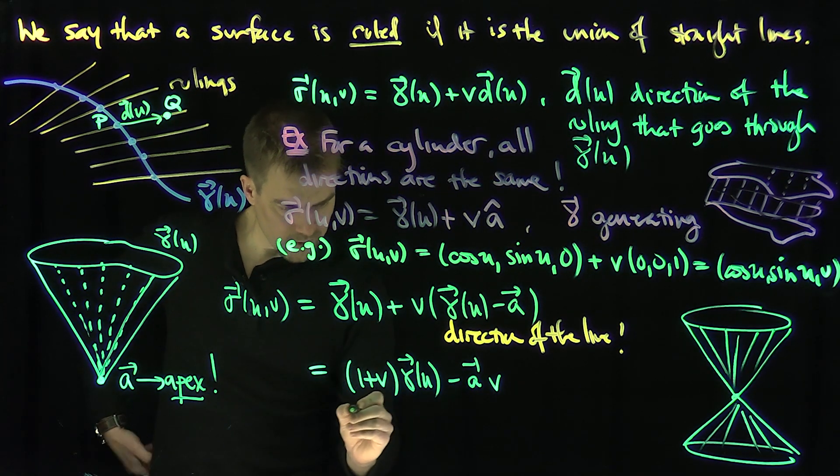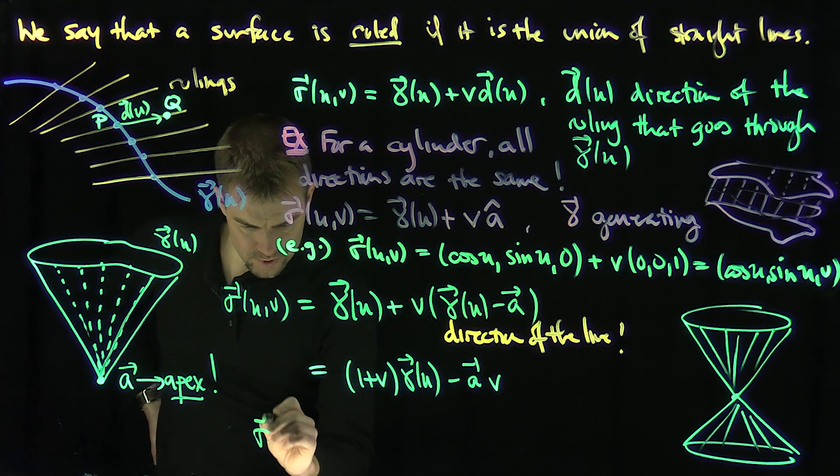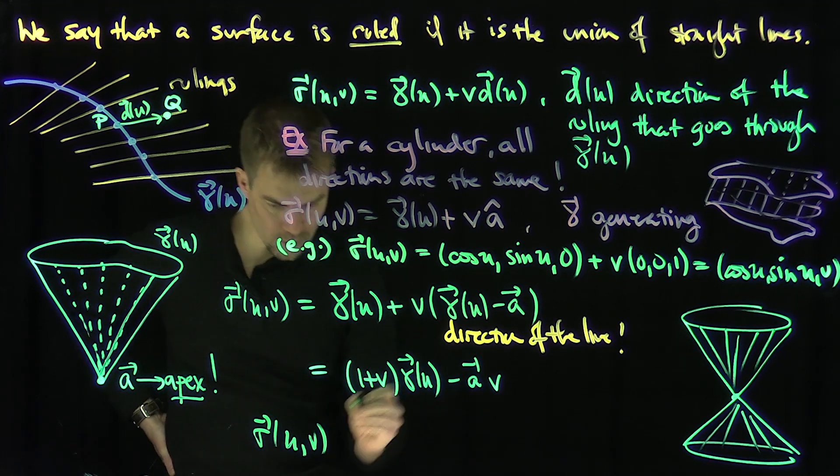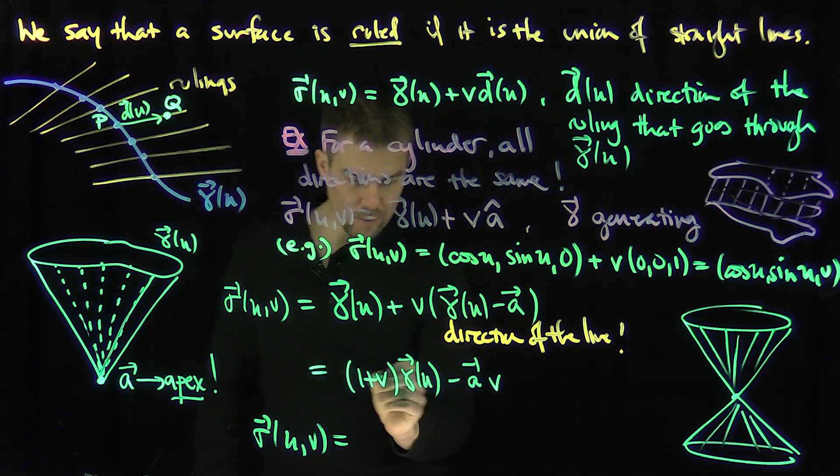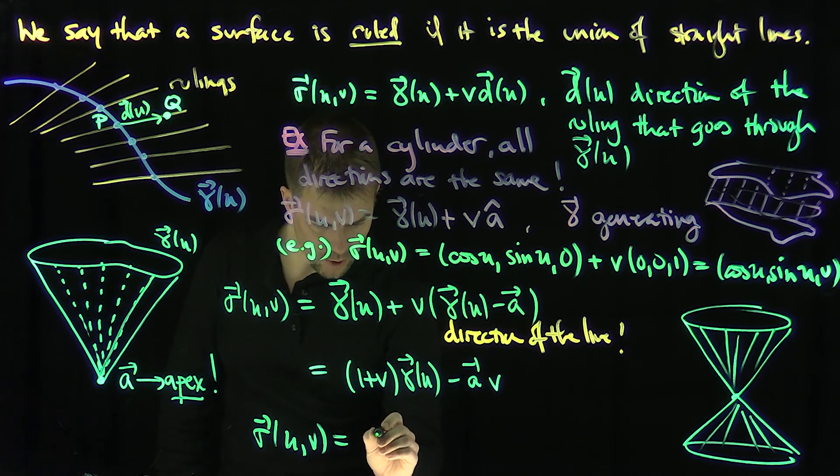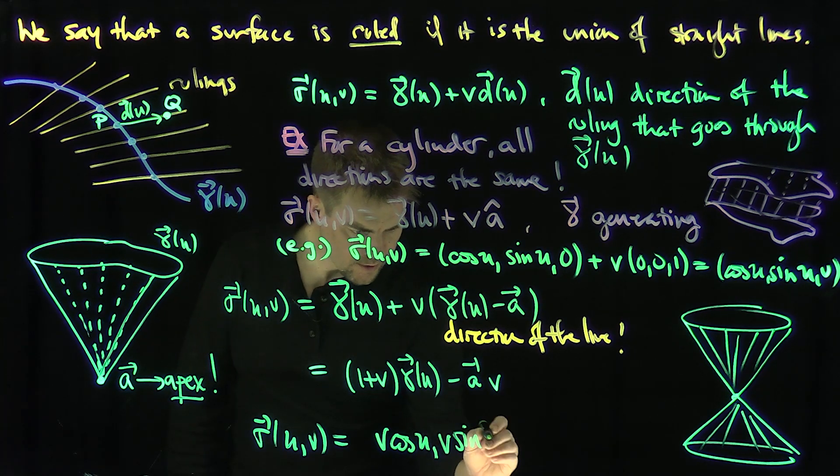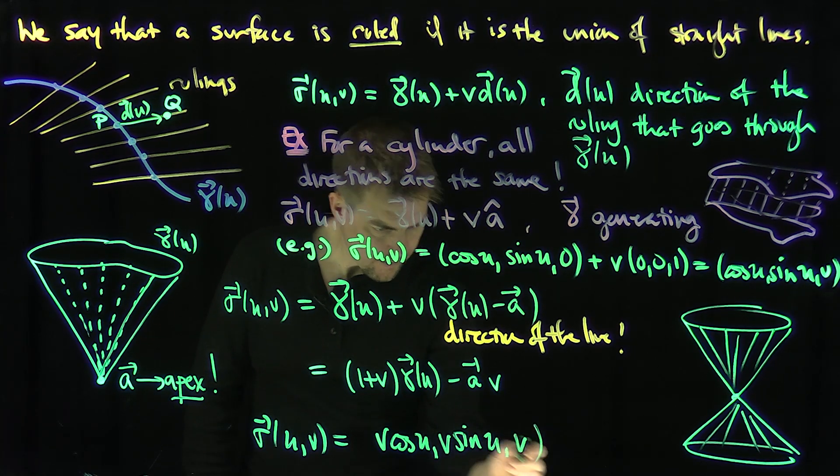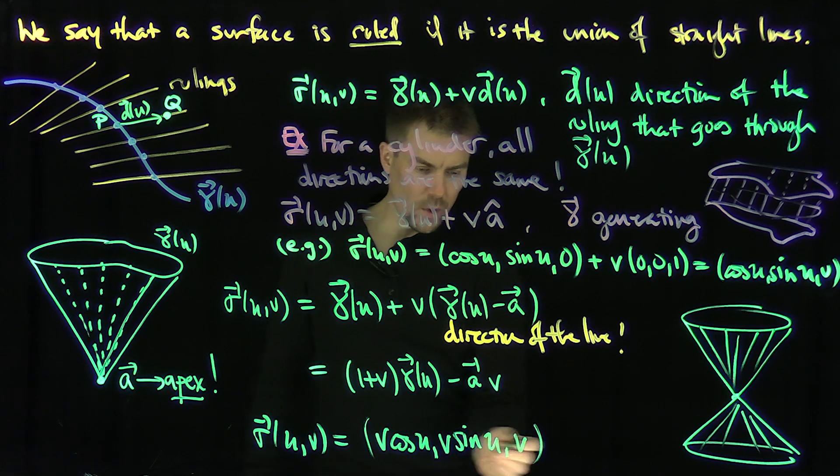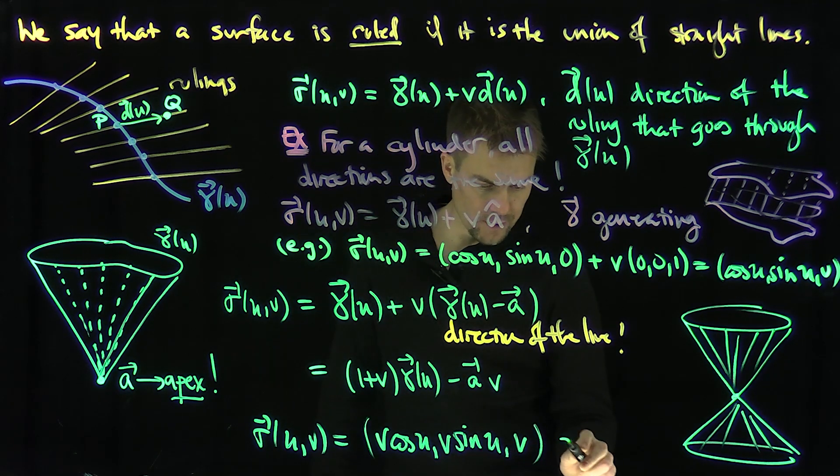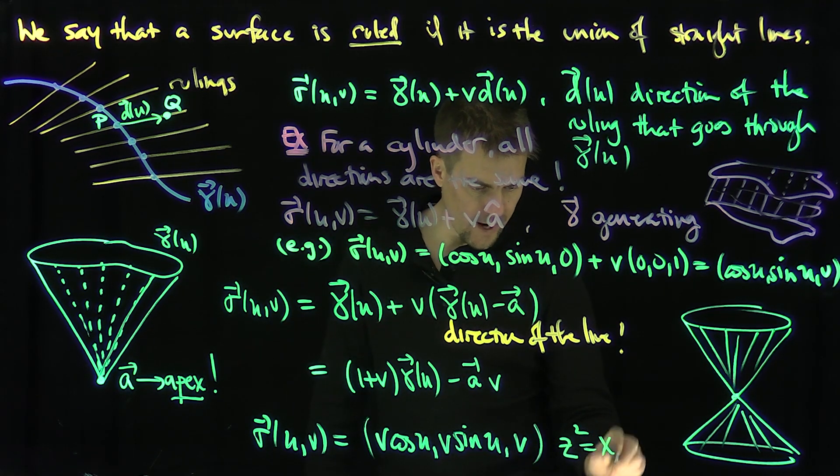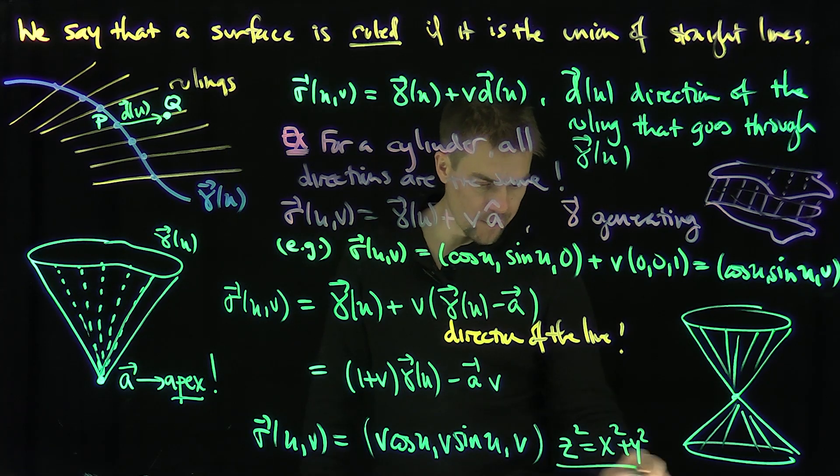Well, what this is going to be is the following. The standard parametrization of a cone, sigma u,v, for a circular cone, is going to be, I'm going to reparameterize it. So we have v cosine u, v sine u, and then v like this. So now x squared plus y squared is equal to z squared. So that's the cone. Z squared is equal to x squared plus y squared. That's the standard calc-3 cone.